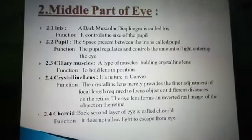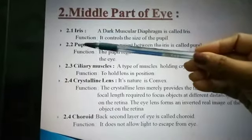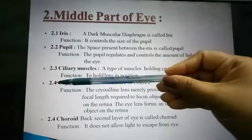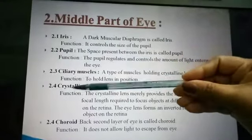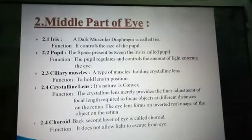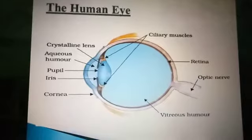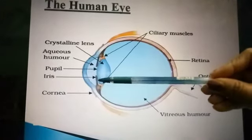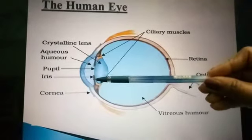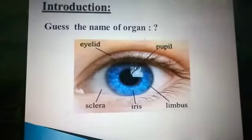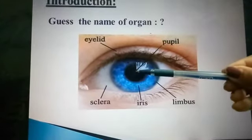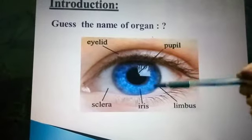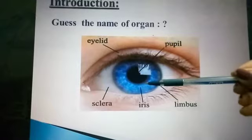Now we move to the middle part of the eye. The following are present: iris, pupil, ciliary muscles, crystalline lens, and choroid — five parts in total. In the diagram, the space present between the iris is known as the pupil, and this dark muscular diaphragm is known as the iris. The iris controls the size of the pupil. You can compare this with the first diagram — the blue portion is the iris and the opening between the iris is the pupil.